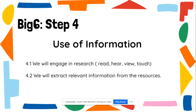Step four is use of information. I have my topic, I know what information I need to address this topic, and I have the sources to get that information. Now we're going to engage in research — we're going to be reading, hearing, viewing, and touching, meaning physically going through a book or clicking on website links. Once we go through that, we're going to extract information that is relevant and applicable to that research topic.